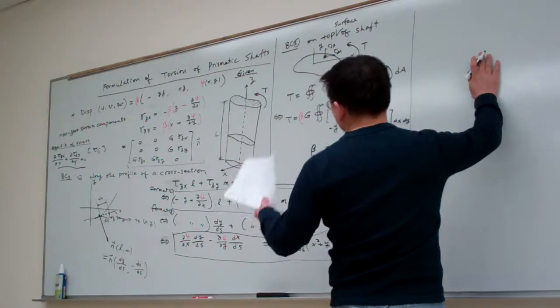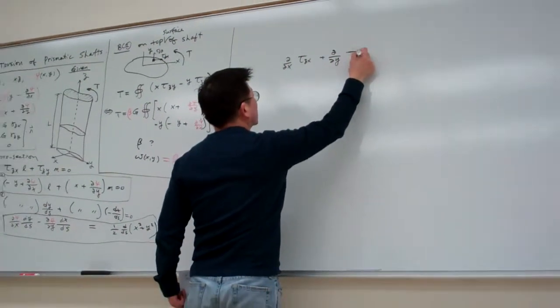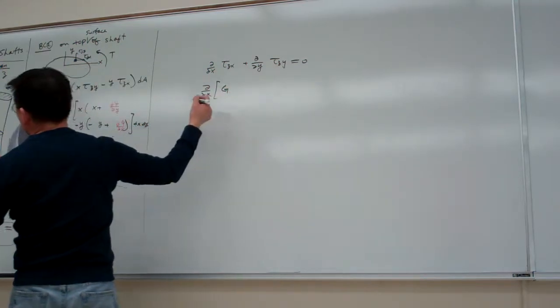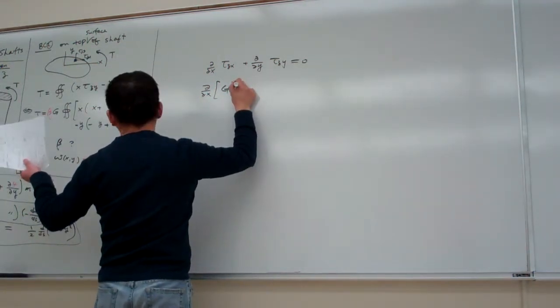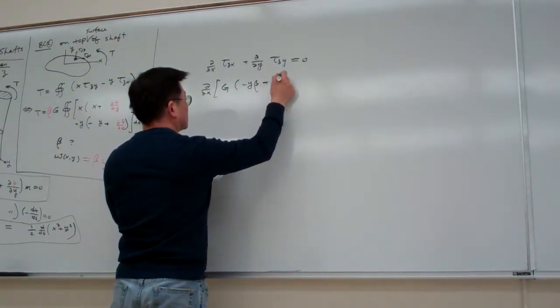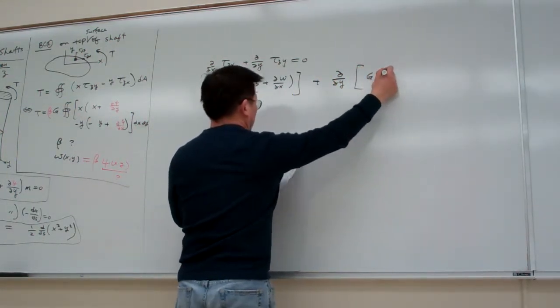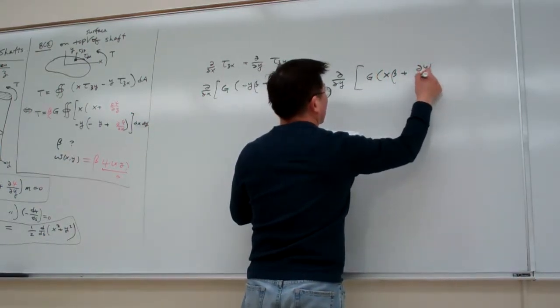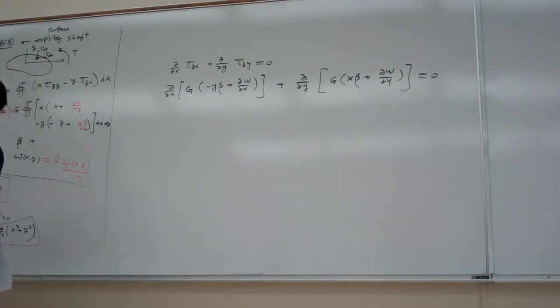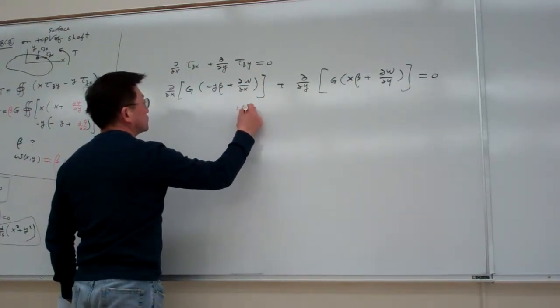So let me insert that one here. So for the stress component, we have partial partial x tau zx, plus partial partial y tau zy, equal to zero. Then let me plug in the stress here. And this one is g in the original form, in the original format.